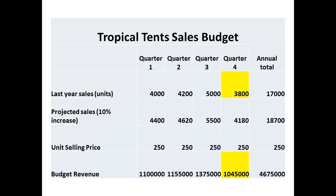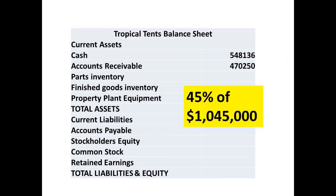The next current asset will be accounts receivable, which means we need to know how much cash the business is owed at the end of quarter 4. The total sales revenue for quarter 4 is $1,045,000. Of that total, 55% was collected in the quarter, leaving 45% to be collected in the following quarter. That 45% figure, which is $470,250, will be the figure we enter into accounts receivable.